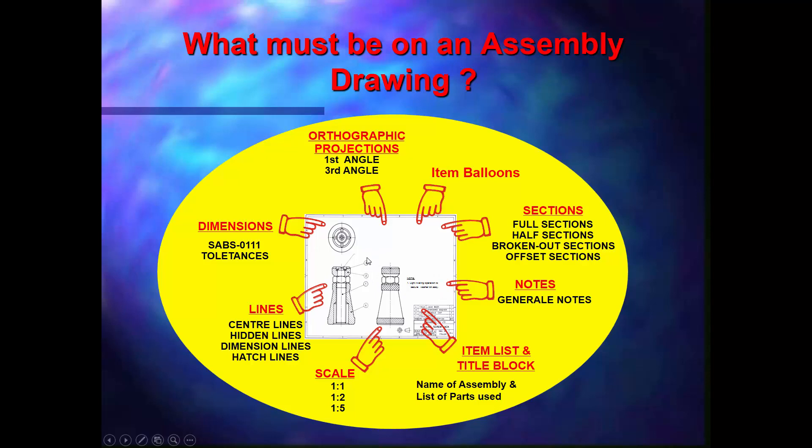The other thing is your ballooning of your items. They are always vertical or horizontal around the object. You can spread them over the different views but only dimension or only shown once on your assembly.